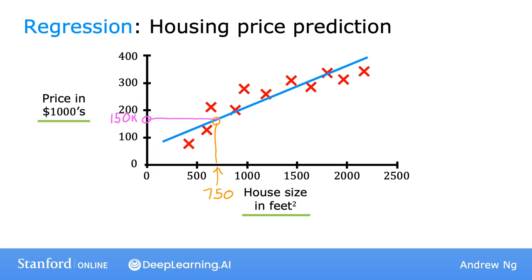For example, rather than fitting a straight line, you might decide it's better to fit a curve — a function that's slightly more complex than a straight line. If you do that and make a prediction, then it looks like your friend's house could be sold for closer to $200,000.